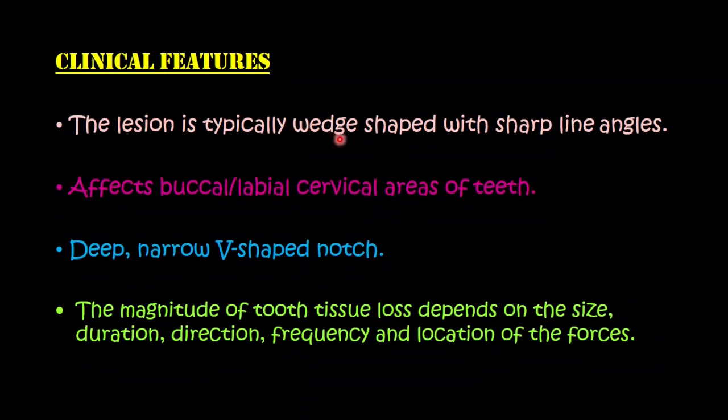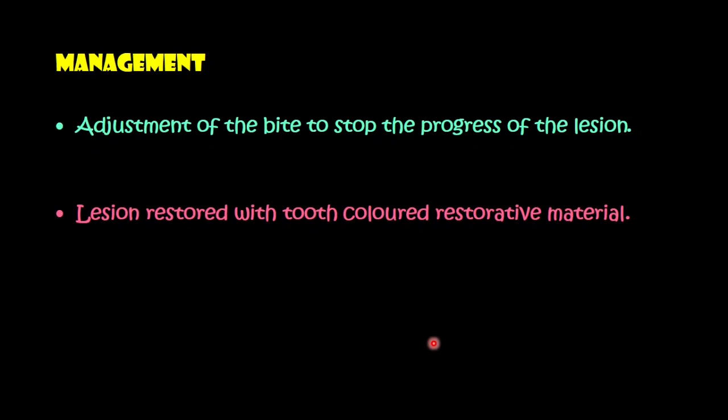The abfraction lesion is typically wedge-shaped with sharp line angles, affecting the buccal, labial, and cervical areas of the teeth. The lesions are deep, narrow V-shaped notches. The magnitude of tissue loss depends on the size, duration, direction, frequency, and location of the force. Since abfraction is basically a theoretical concept not yet proven by appropriate clinical evidence, management involves adjusting the bite — removing inappropriate occlusal contacts and reducing heavy and premature contacts. Although the effectiveness of such treatment is not supported by evidence, adjustments should be carried out to remove only the interferences while preserving the original point of centric occlusion. After that, the lesion can be restored with tooth-colored restorative material.